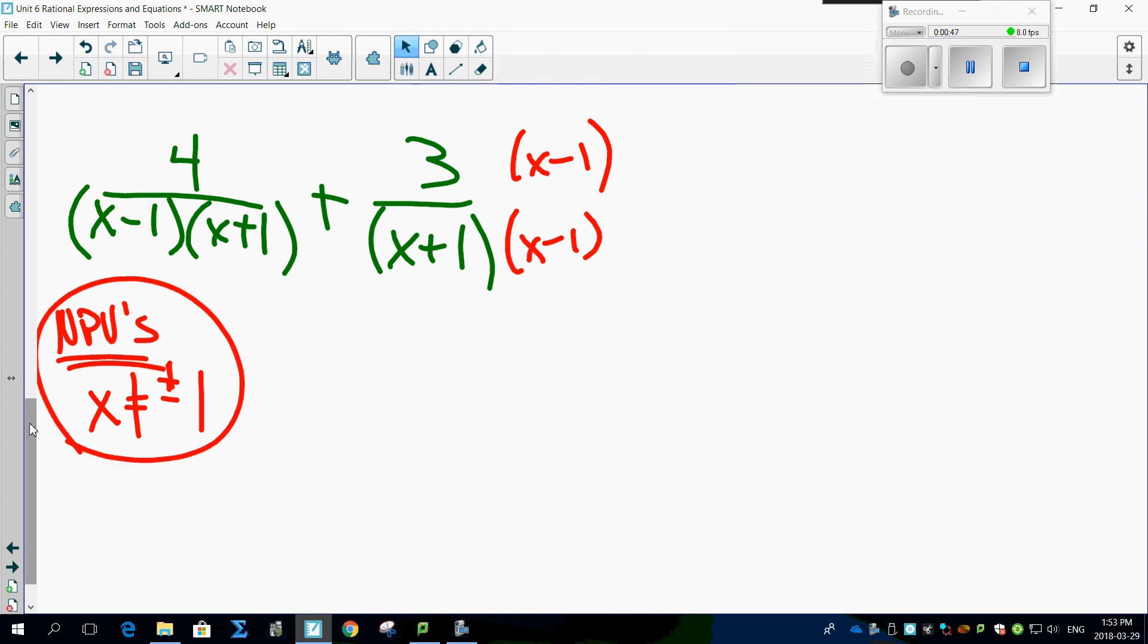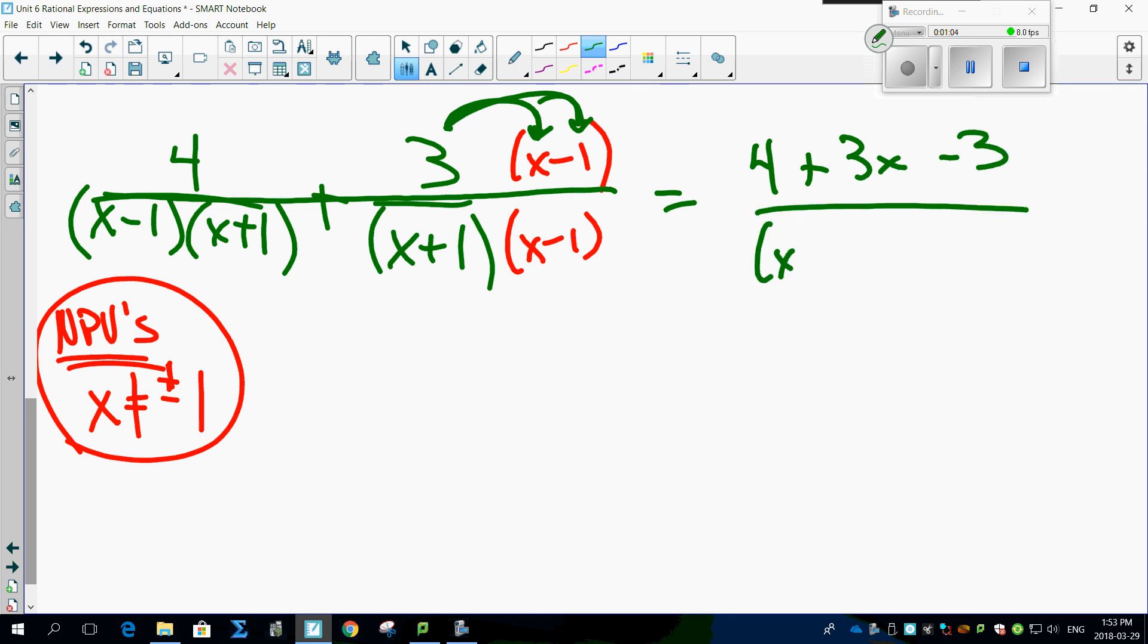Now, here we go. That means to distribute this guy over, leaving you with a whole line. All right. 4 plus, first one is 3x minus 3 all over (x plus 1)(x minus 1). Okay.